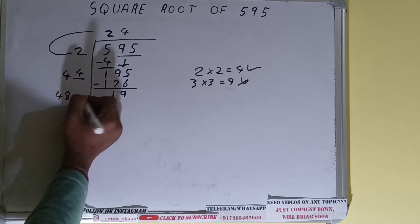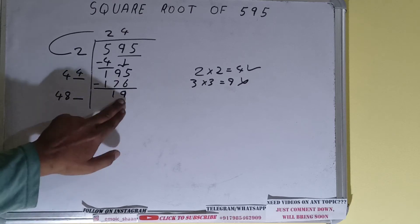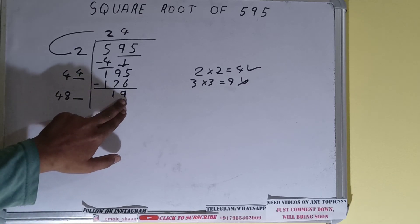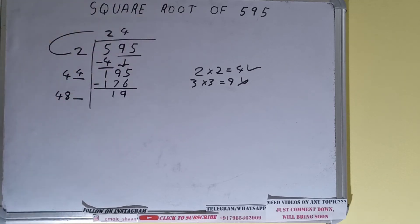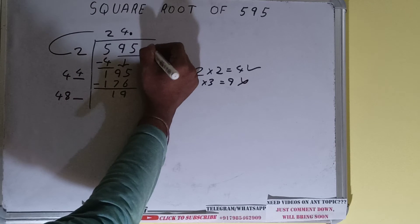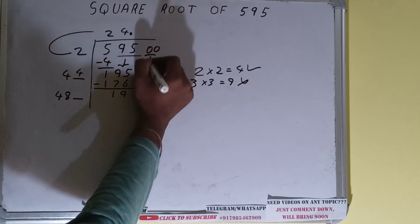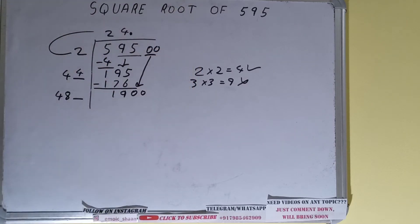This number we need to make bigger but we don't have any more pairs, so we'll put a decimal. Once we put a decimal we can bring down a pair of zeros and the number will become 1900.